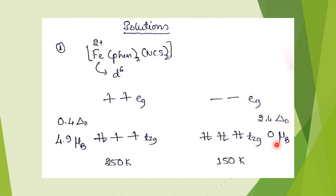Here it should be for zero unpaired electrons, 0 Bohr magneton. 2.4 Δ0 should go with 0 Bohr magneton, and 0.4 Δ0 should go with 4.9 Bohr magneton. If you just correlate these two things, then you can eliminate two options. If the correlation is not given in the option, that option cannot be correct and can be readily eliminated.